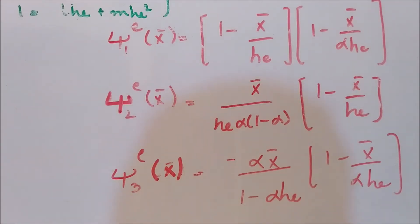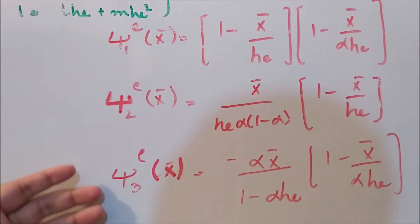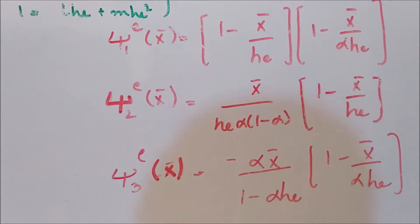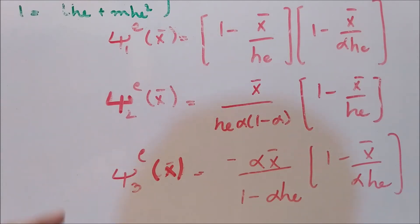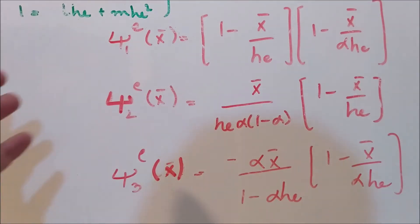This is DA from eAcademy. In the previous video we derived the shape functions of a quadratic element, and we are still in our second step of the finite element method — the derivation of element level equations. Today we will take a step back, see where we stand, and then proceed to the next step of the finite element method.